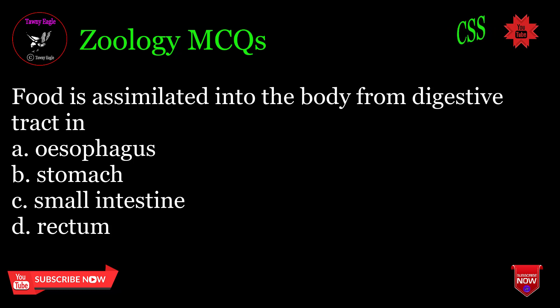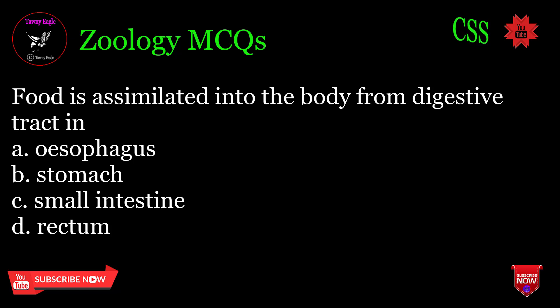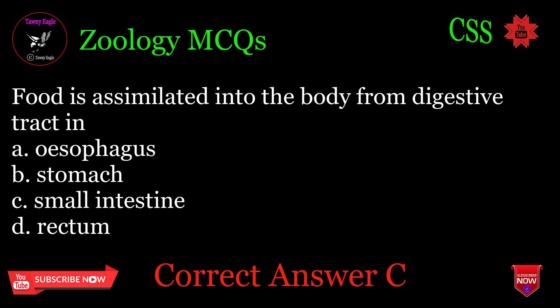Food is assimilated into the body from the digestive tract in: A. Esophagus, B. Stomach, C. Small intestine, D. Rectum. Correct answer: C.